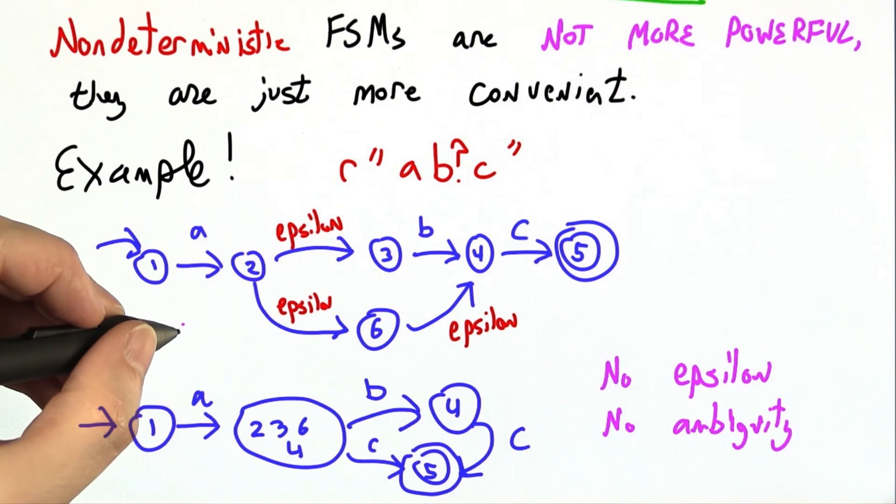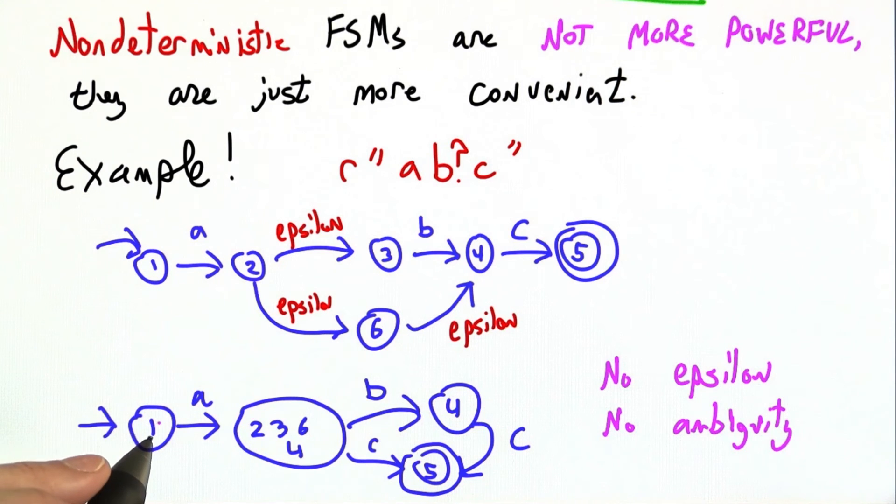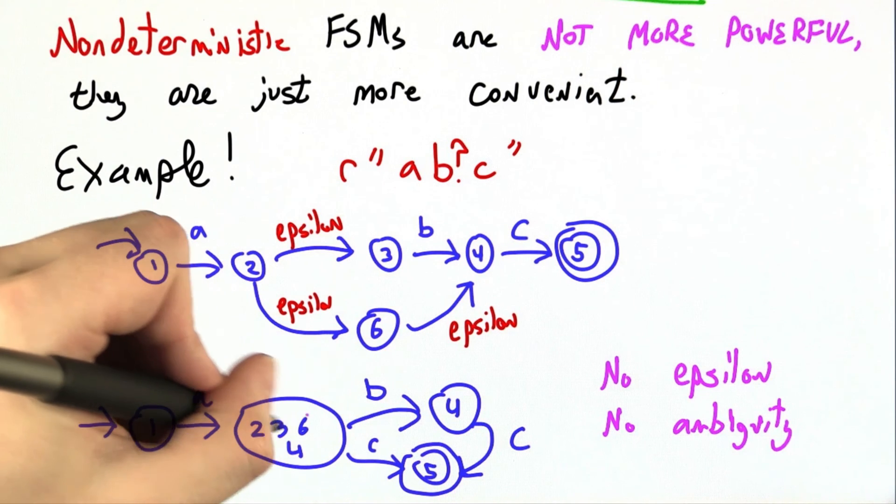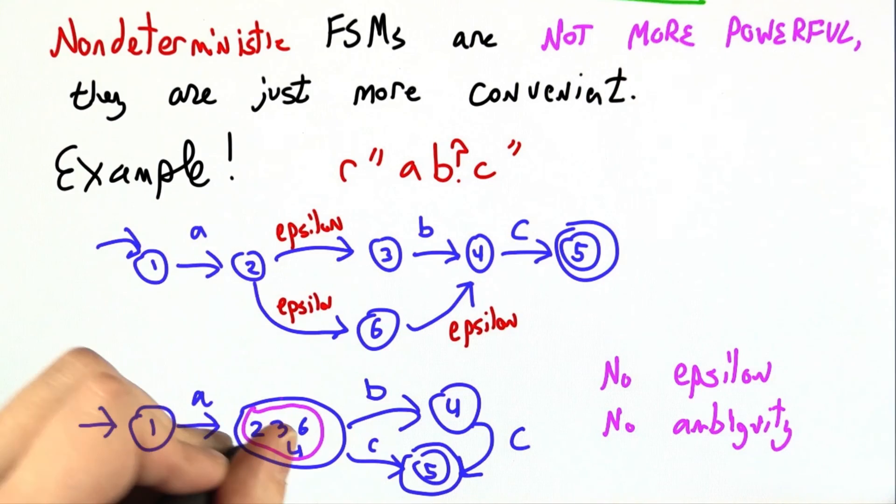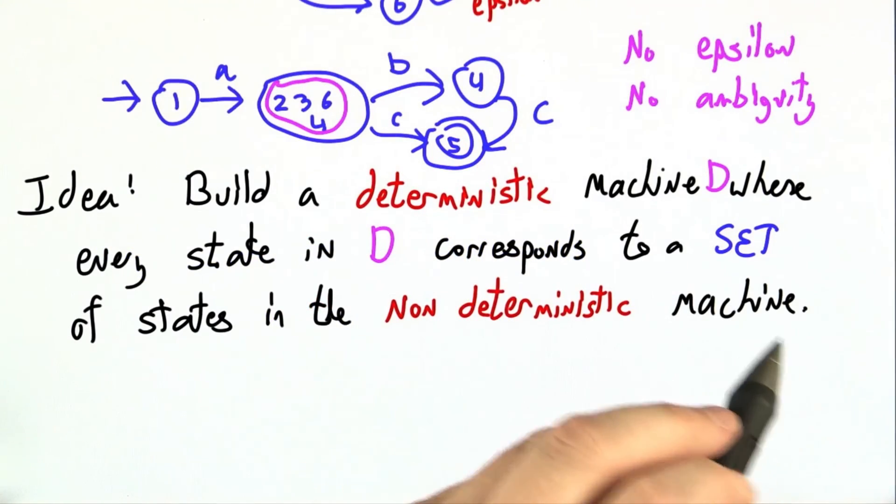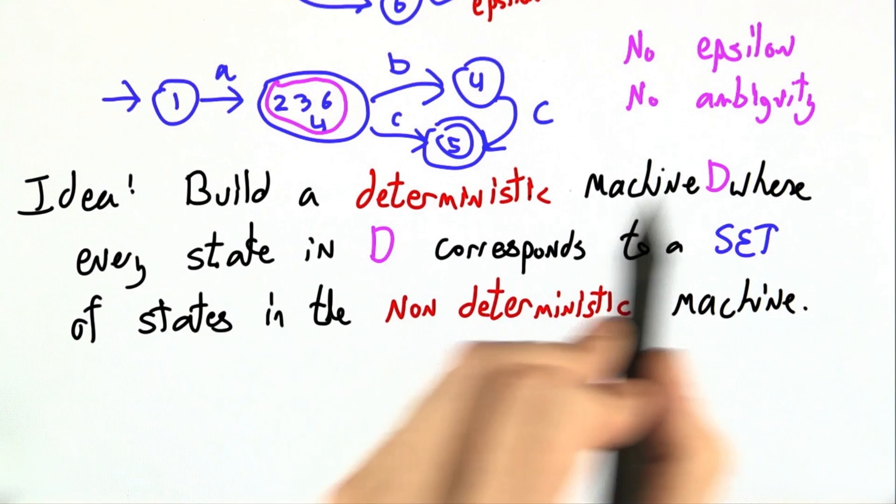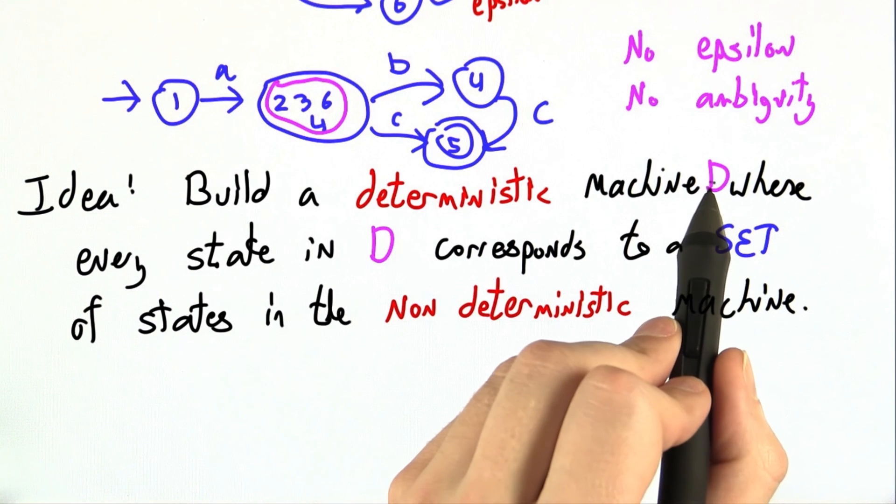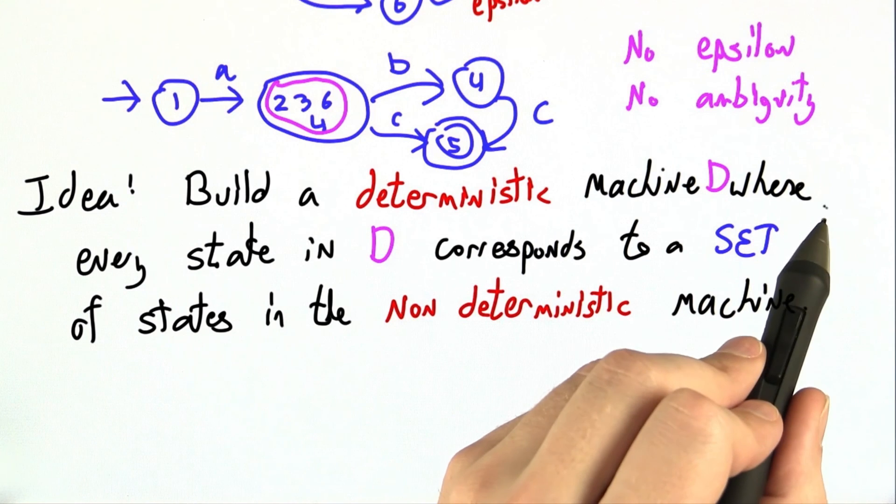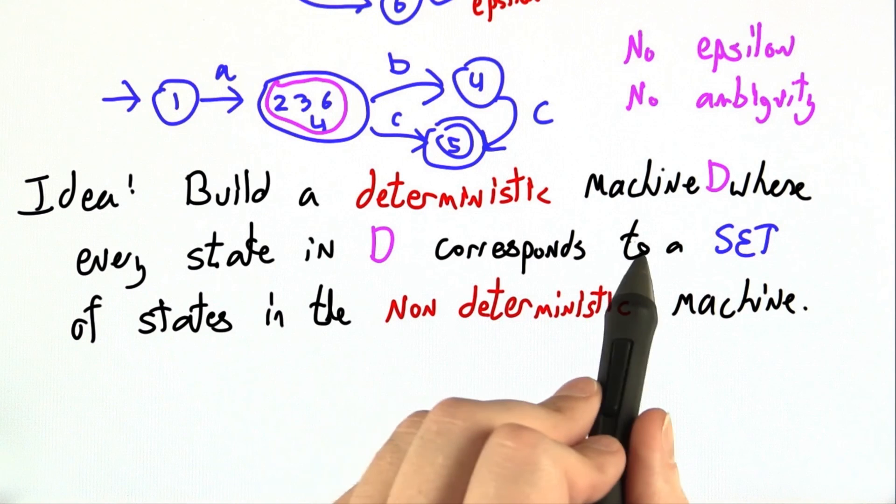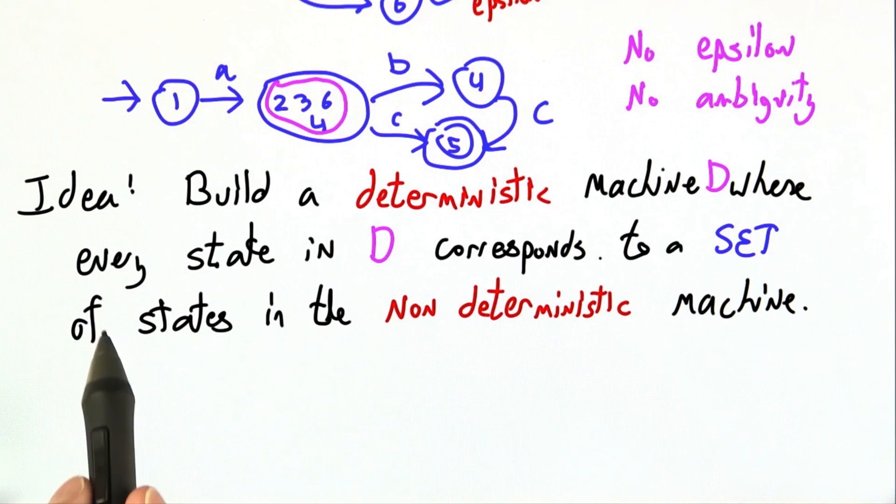Let's see another example of how this works. Again, I'm going to build a deterministic machine where every state in the deterministic machine corresponds to a set of states in the non-deterministic one. Again, to restate that, you give me a non-deterministic machine, I'm going to build you a deterministic machine, D, that accepts the same language. And the way I'll do it is, every state in D is going to correspond to a set of states in the non-deterministic machine you gave me.